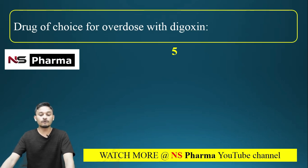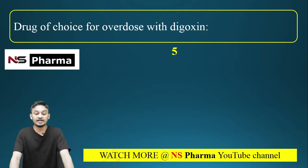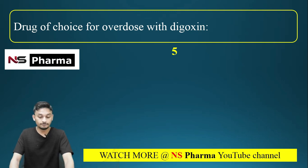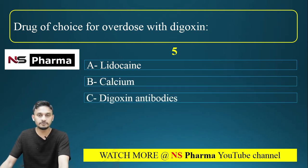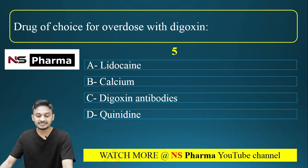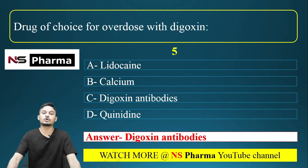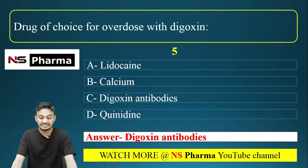Question number 5: Drug of choice for overdose with digoxin. What is the drug of choice in case of digoxin toxicity? Options are: option A, lidocaine; option B, calcium; option C, digoxin antibodies; option D, quinidine. The correct answer is option C, digoxin antibodies, also called digibind, digoxin immune Fab, or in short, digifab.